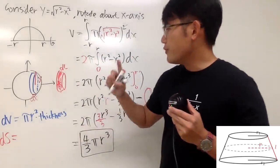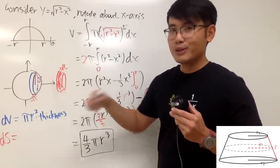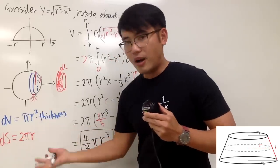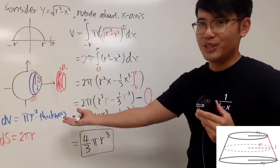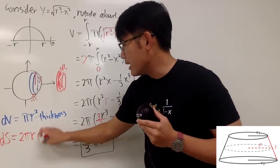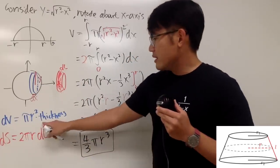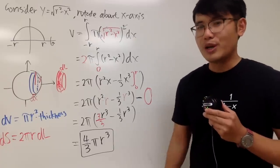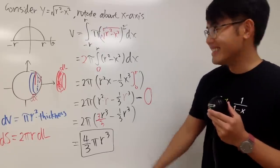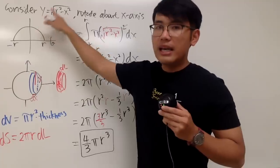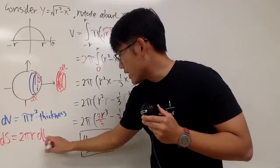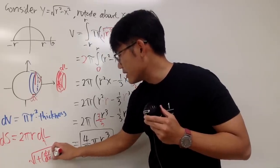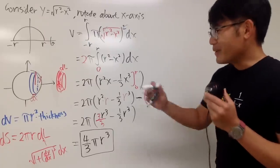First, you have to find the radius from the center to the edge — check out my other video for a detailed explanation. The general formula is 2π r times dl. The radius r is again the y value, just like before. The dl this time is the arc length element. Since we have y as a function of x, we use this version: dl equals the square root of 1 plus (dy/dx) squared, times dx.